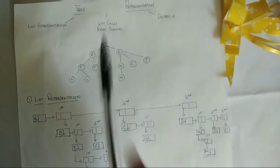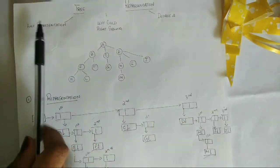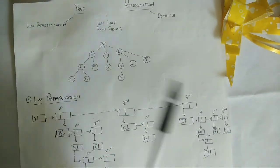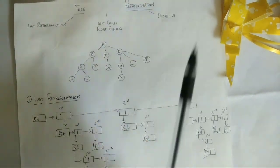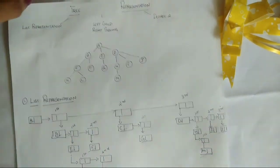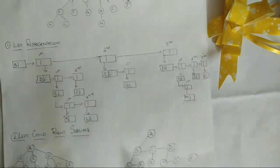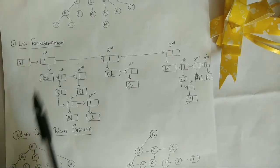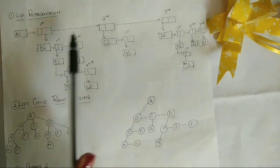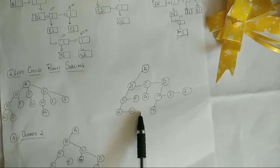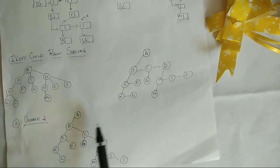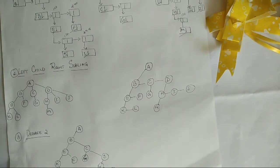Tree representation has three types: list representation, left child right sibling, and degree 2. For the given tree, I have shown the different ways of representing them — list representation, left child right sibling representation, and degree 2. So let's meet in the next video. Bye bye.